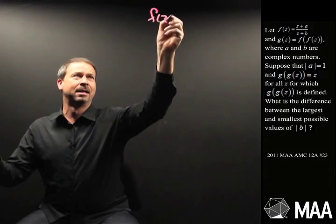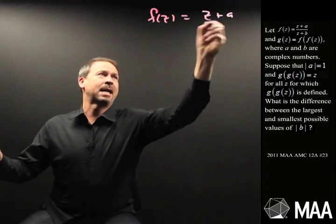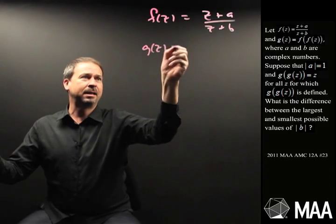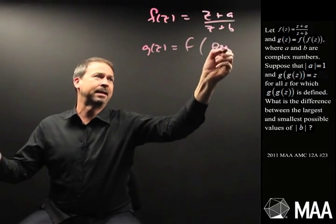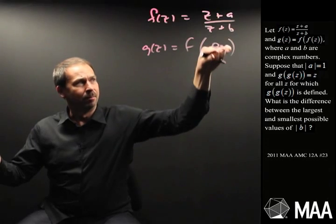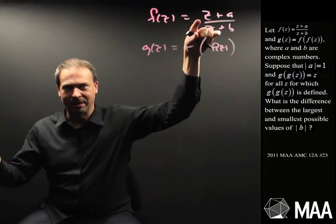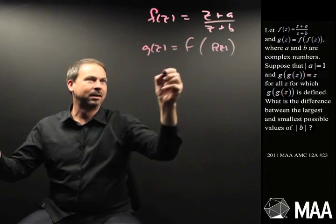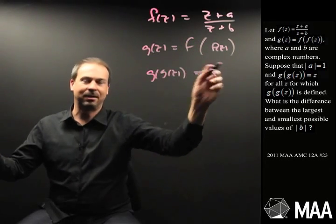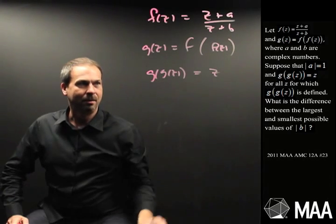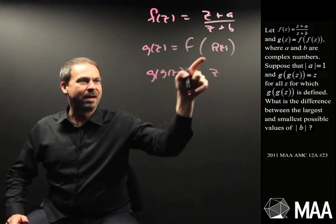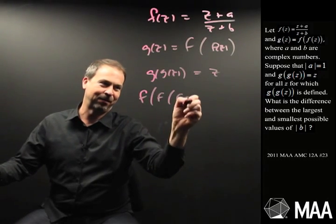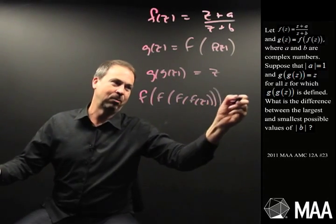Slowly, slowly, just take it in. f of z is z plus a over z plus b, and g of z is f of f of z. So I take that formula and put it as the input into that function itself. That's going to be complicated. It tells me that g of g of z equals z — that is, g is f of f, so f of f of f of f of z equals z.